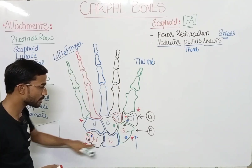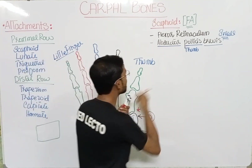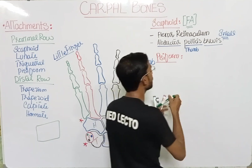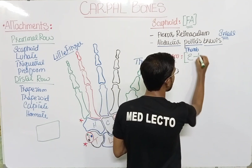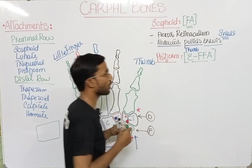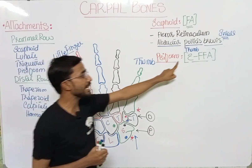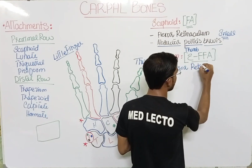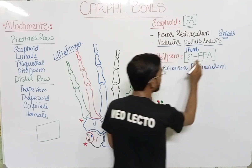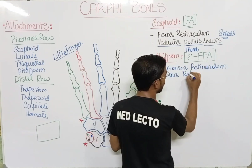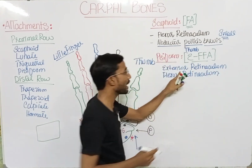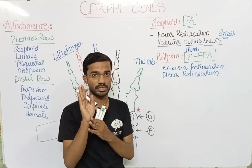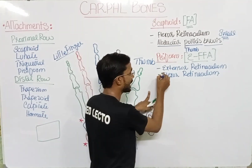Next is the first proximal row second corner, which will be the pisiform. You will remember it with the mnemonic EFFA. The first attachment E stands for extensor retinaculum and the second is flexor retinaculum. These are both connective tissues — the extensor retinaculum lies at the dorsal aspect of the wrist, while the flexor retinaculum lies at the palmar aspect. These are the two connective tissues that attach to the pisiform.